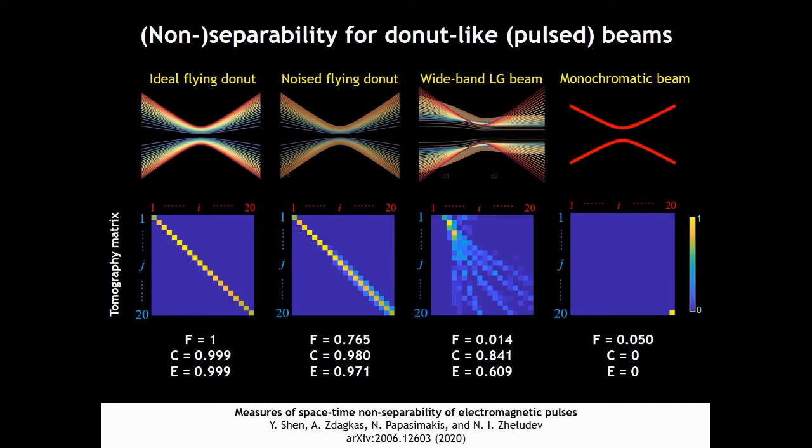And the concurrence and the EOF of the flying donut is nearly 1. That means the ideal space spectral non-separability is perfect. Well, that is decreased for the noise flying donut.